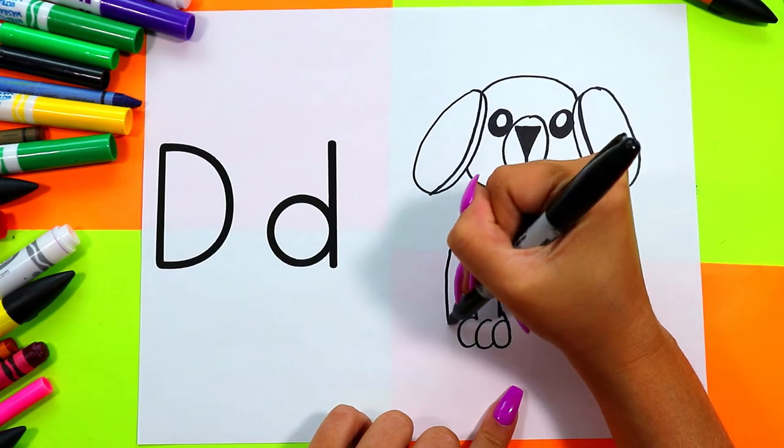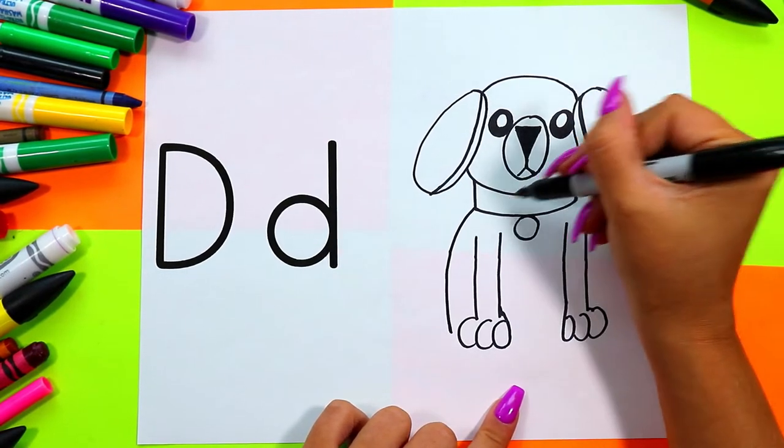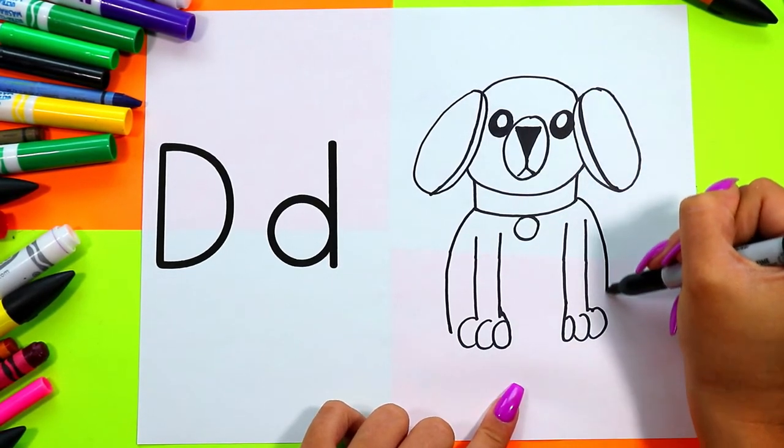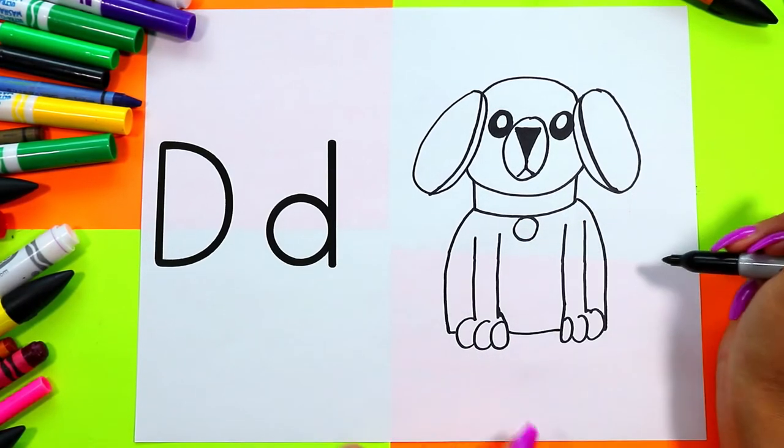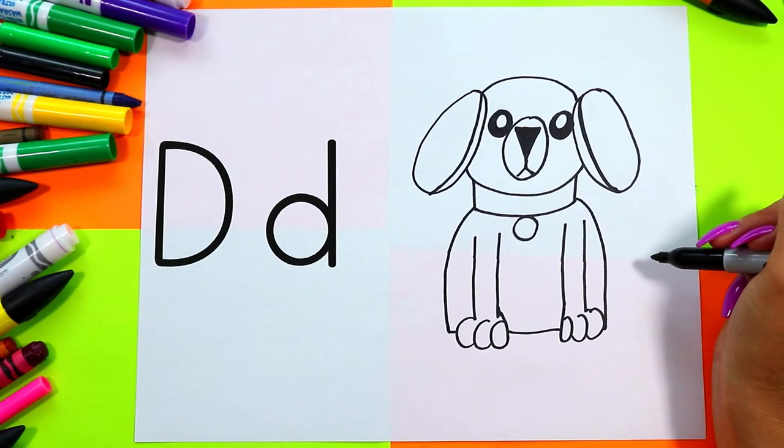Draw one curved line down from the collar and a second curved line down, and connect the bottom of dog to create the belly.